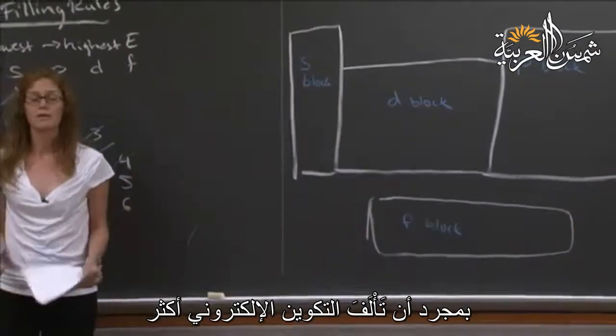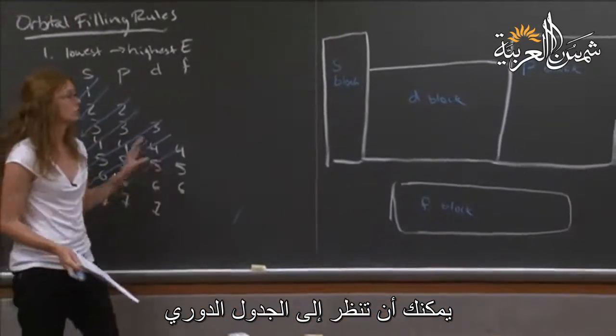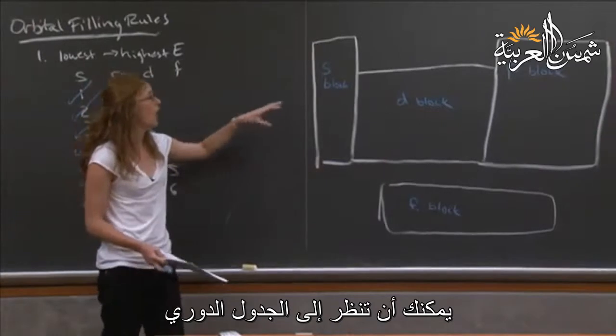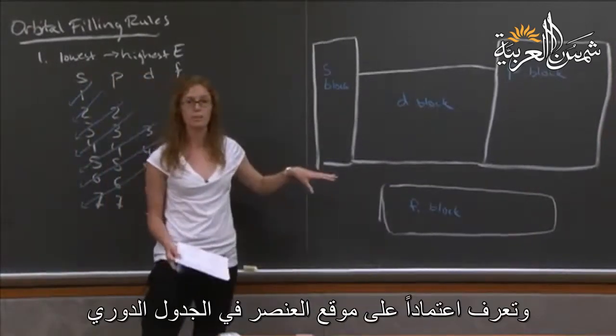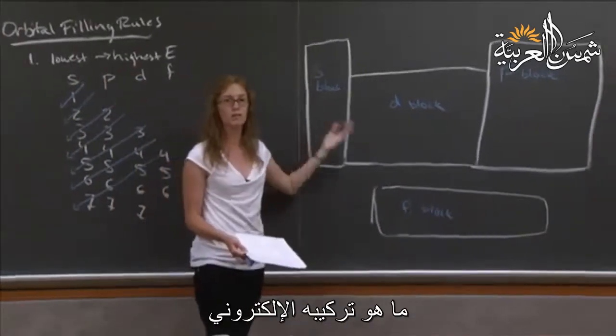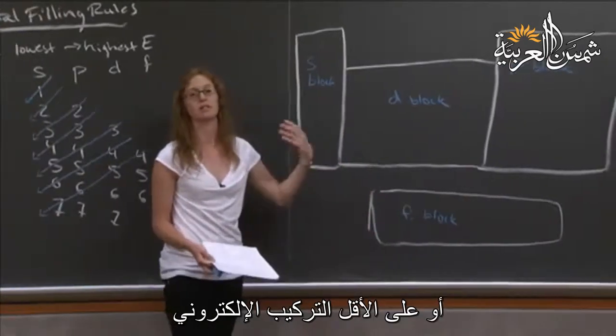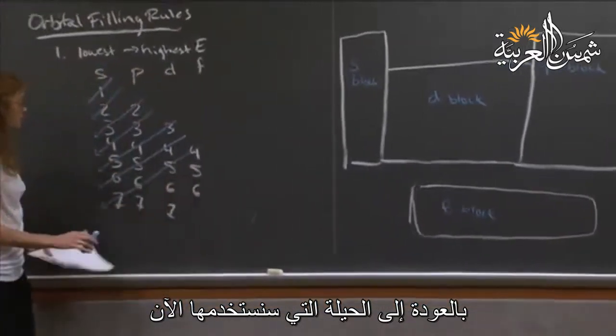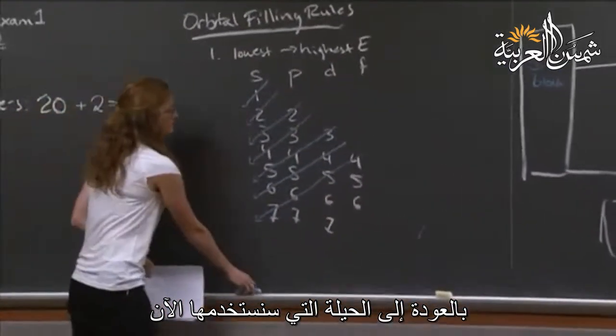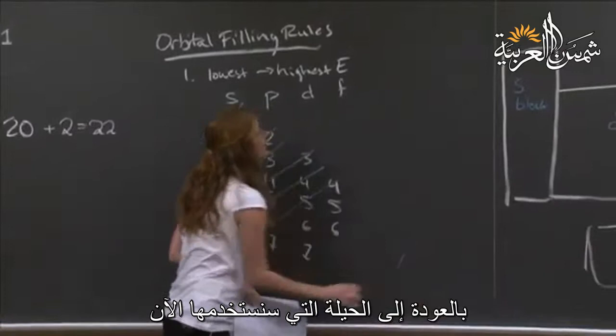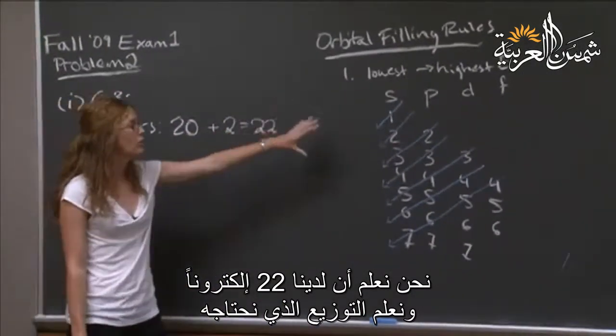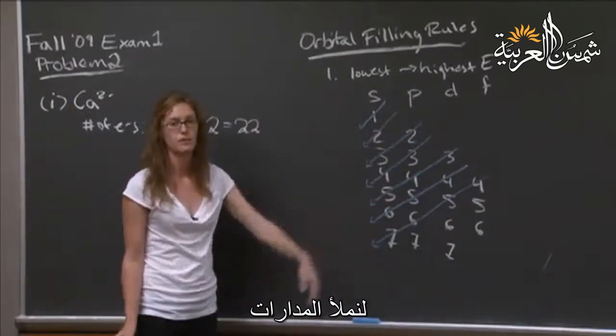Once you get more familiar with electron configurations, you can actually look towards the periodic table and know, depending upon where your element is in the periodic table, what its electron configuration is, or at least the electron configuration of the valence electrons. So moving back to our trick, which we'll use now, we know that we have 22 electrons, and we know the order that we need to fill the orbitals.